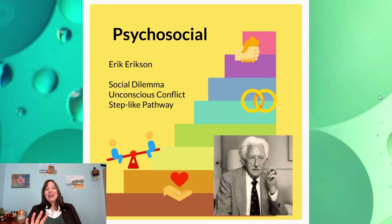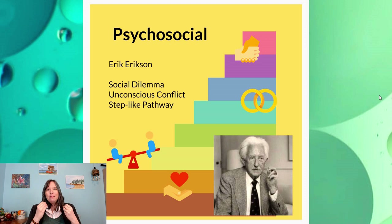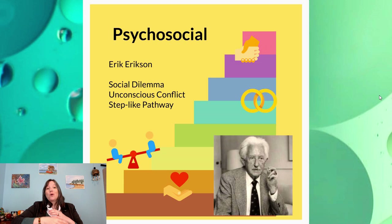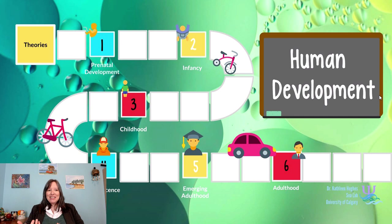Finally, our seventh theory is Erik Erikson's theory of psychosocial development. Where Freud focused on psychosexual conflicts, Erikson focused on social ones — an unconscious social dilemma we have to resolve at each stage of development. Unlike Freud, Erikson believed this was a step-like pathway, but you could always go backwards and help resolve earlier stages you had issues with, once you became aware of them. Now that we've defined the rules and the theories, next we're going to roll the dice and move into prenatal development.